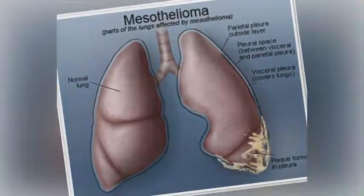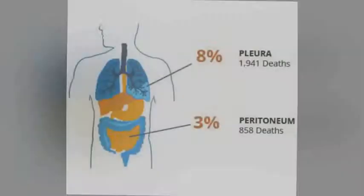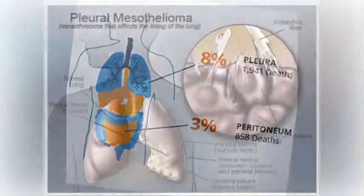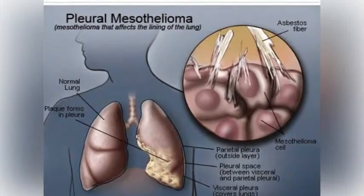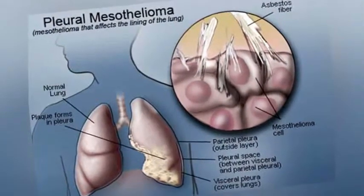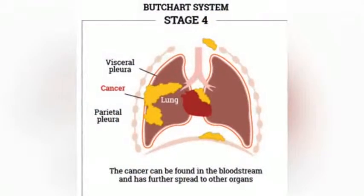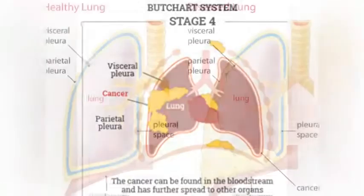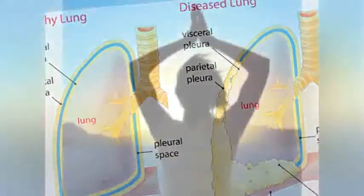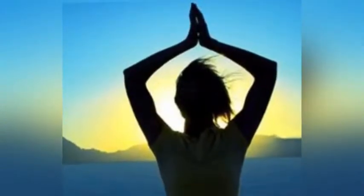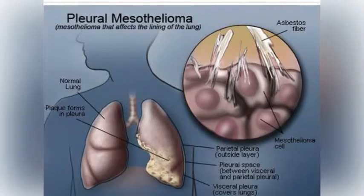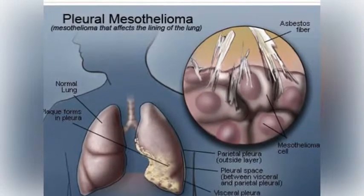Mesothelioma is a type of cancer that develops from the thin layer of tissue that covers many of the internal organs, known as the mesothelium. The most common area affected is the lining of the lungs and chest wall. Less commonly the lining of the abdomen, and rarely the sac surrounding the heart or the sac surrounding the testis may be affected. Signs and symptoms of mesothelioma may include shortness of breath due to fluid around the lung and weight loss.